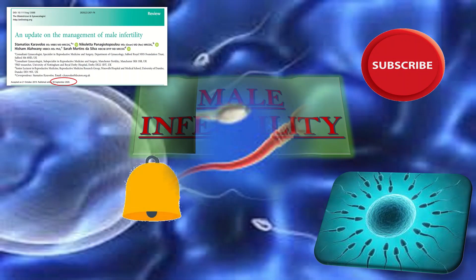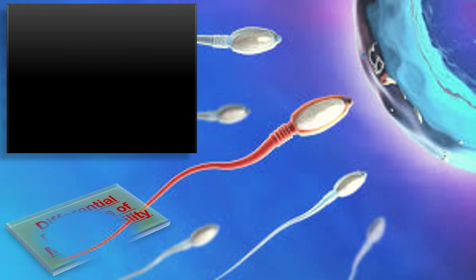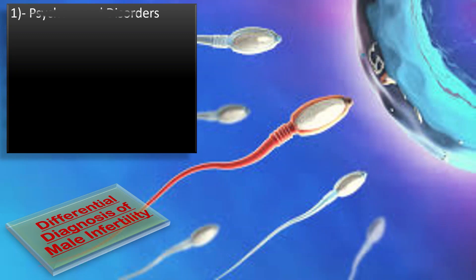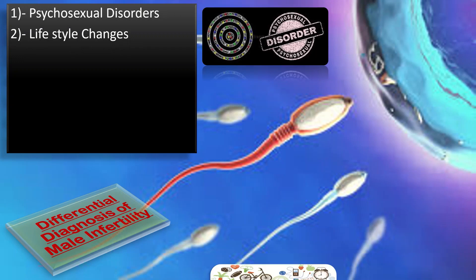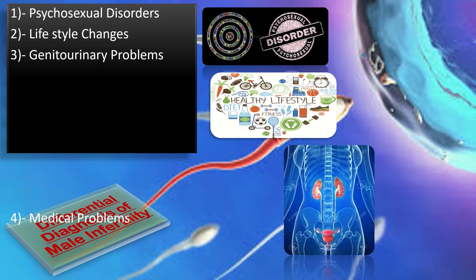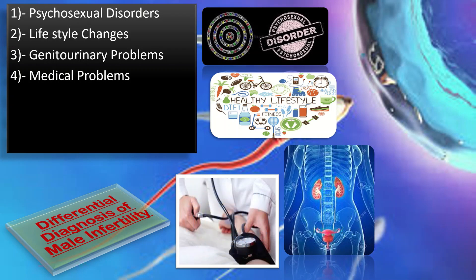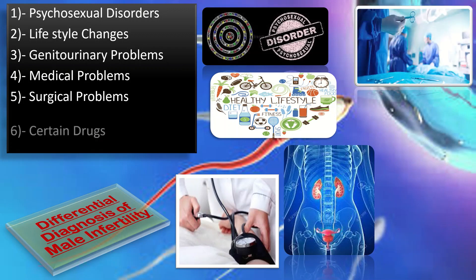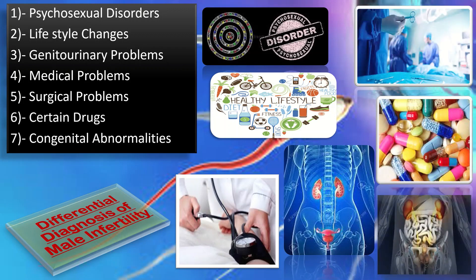What are the differential diagnoses of male infertility? Before approaching any case in Obs and Gynae, the first thing that should come to the mind of a clinician is the differential diagnosis — what are the causes of such a problem. In case of male infertility, the list includes: psychosexual disorders, lifestyle changes, genitourinary problems, medical problems like mumps orchitis and TB, surgical problems, certain drugs, and congenital anomalies.